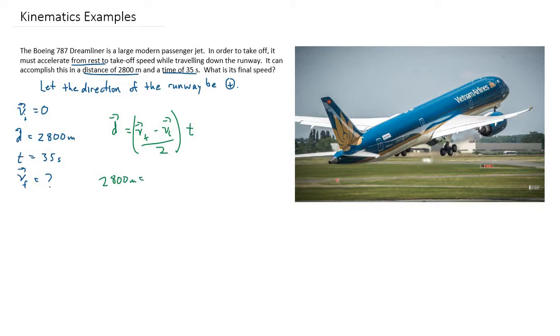The final velocity is what we don't know, so we're going to leave that as a variable. The initial velocity is zero. That gets divided by two, and the time is 35 seconds. So right away, that zero term becomes meaningless.